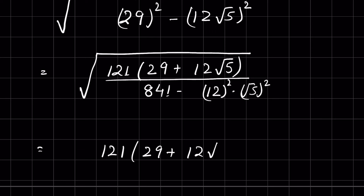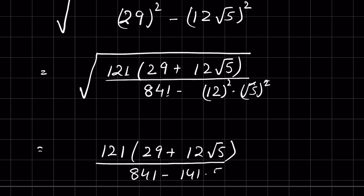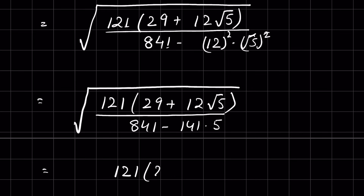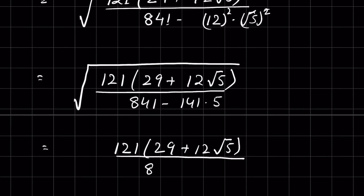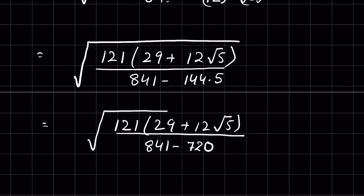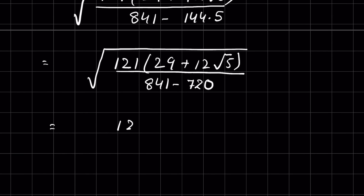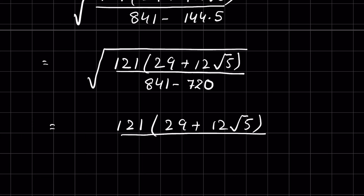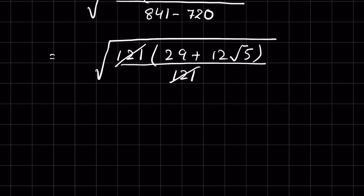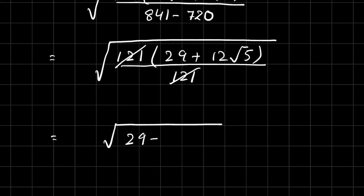12² × 5 = 144 × 5 = 720. So the denominator is 841 - 720 = 121. We now have 121 × (29 + 12√5) divided by 121, all under a square root. The 121 factors cancel, leaving √(29 + 12√5).